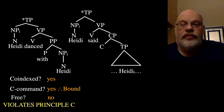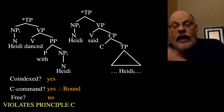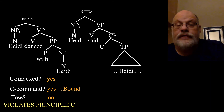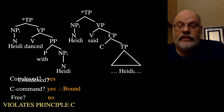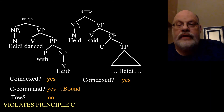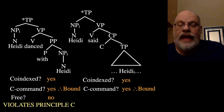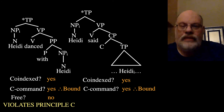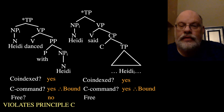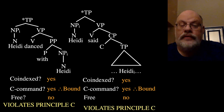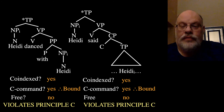The same holds true in the second tree: 'Heidi said... Heidi.' Those two noun phrases are co-indexed and in a C-command relationship — the higher Heidi C-commands the lower one. Co-indexed and C-commanded means bound. R-expressions cannot be bound; they must be free. So this is also a violation of Principle C.